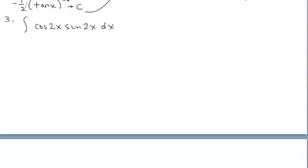For this next example, the first thing I look at is: do I have a trig function whose derivative would give me cosine times sine? Well, none of the six trig derivatives produce cosine times sine, so we can't proceed that way. I don't really see any powers. If I let u just be 2x, I'd reduce this to cosine(u)·sine(u), which again is not the derivative of one of the six trig functions. I notice I have a product here. If I see cosine(2x) times sine(2x), I could let u be either cosine(2x) or sine(2x). I'm going to let u be sine(2x), because that derivative is pretty straightforward.